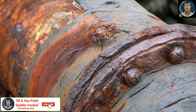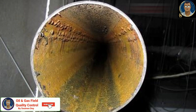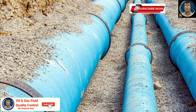Stress corrosion is a type of environmentally assisted cracking, or the formation of cracks caused by various factors combined with the environment surrounding the pipeline. It occurs as a result of a combination of corrosion and tensile stress. Another critical type is microbiological corrosion, which occurs due to the presence of sulfate-reducing bacteria. They convert sulfate in the soil to sulfide, which attacks the steel directly, causing severe pits.